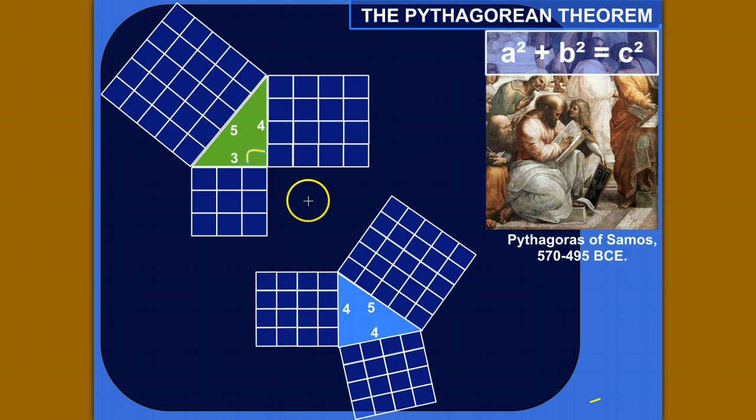So, for example, let me just show you with the right triangle first. So what the Pythagorean theorem says is that if you have a right triangle like this, with a longest side here, this hypotenuse, if you take the two shorter sides and square their lengths, so say this is a length of three units, let's say. So if you were to square that, three by three, you'd get an area of nine, nine squares here.